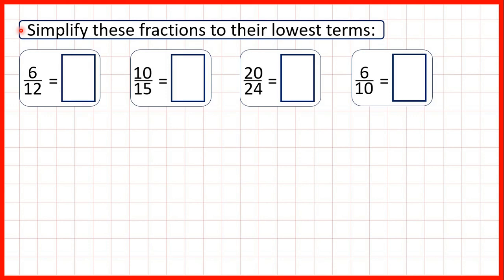Now, we need to simplify these fractions to their lowest terms. And the way we simplify fractions is by dividing both the numerator and the denominator by the highest common factor of both numbers.